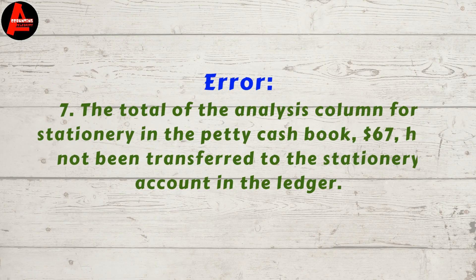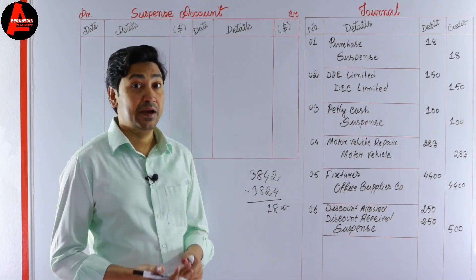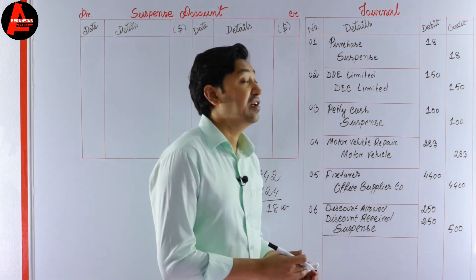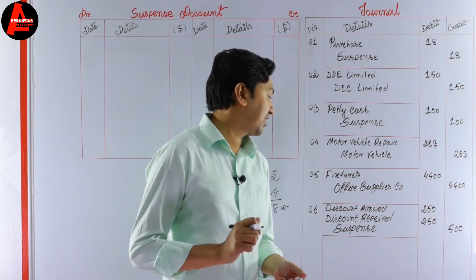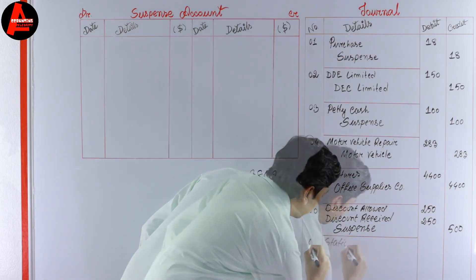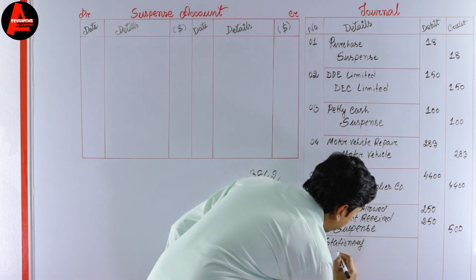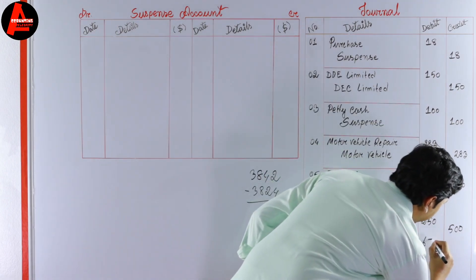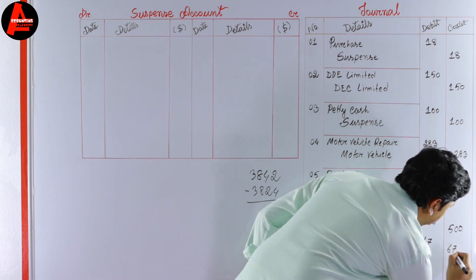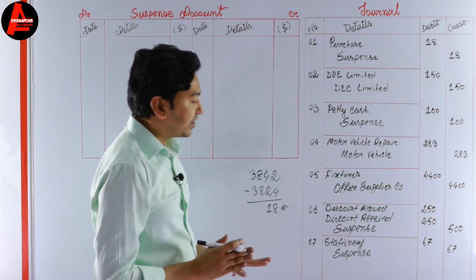Number seven: the total of the analysis column for stationery in the petty cash book, 67 dollars, had not been transferred to the stationery account in the ledger. Stationery is an expense — it is debited when transferred. So: stationery to be debited and suspense account to be credited. The amount is 67 on the debit and 67 on the credit column. All seven transactions are now corrected.